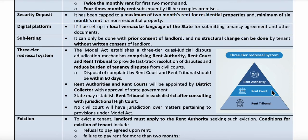The state government, after consulting the high court, may establish the rent tribunal in each district. So all three tiers are at the district level: the rent authority and rent court are appointed by the district collector, and the rent tribunal is established after permission is granted by the high court. This three-tier redressal system has been established for speedy disposal and resolution of cases.